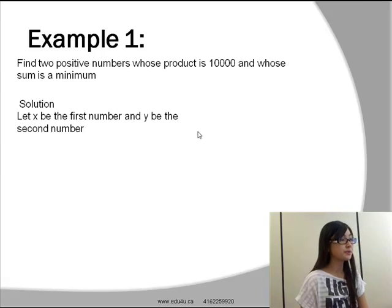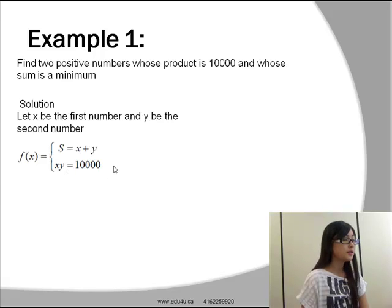First, we have to define our variables. Let x be the first number and y be the second number. We say the product is 10,000, therefore x times y will be equal to 10,000. Then we have to make sure that their sum, which is x plus y, will be a minimum.